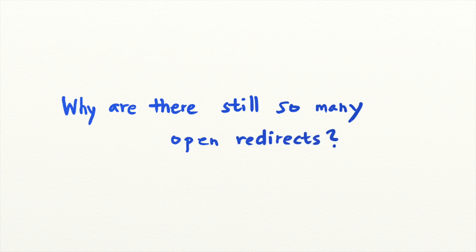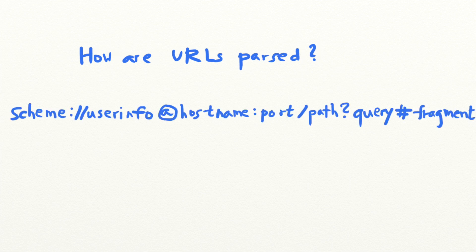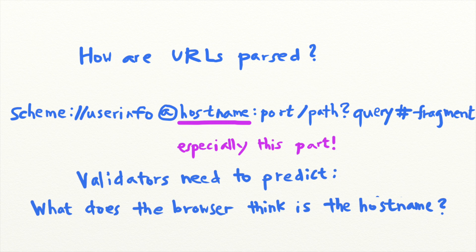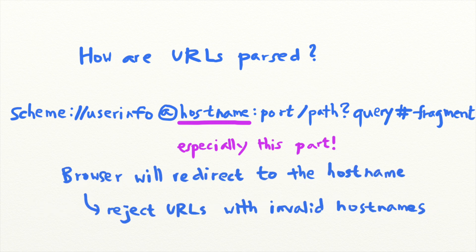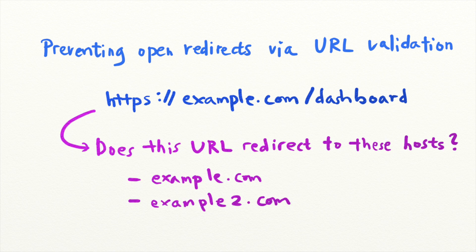Why are Open Redirects still so common today? Let's first take a look at how URL parsing is done. Here you can see the components of a URL. How the browser redirects the user depends on how the browser differentiates between these URL components. The job of a URL validator is to accurately predict how the browser will redirect the user and reject URLs that will result in a redirect off-site. The most common way URL validators determine redirect URL validity is through a whitelist — checking the hostname portion of the URL to make sure it matches a determined list of allowed hosts. That sounds straightforward, but the reality is that parsing and decoding a URL is difficult to get right, so validators often have a hard time determining the hostname portion of the URL.